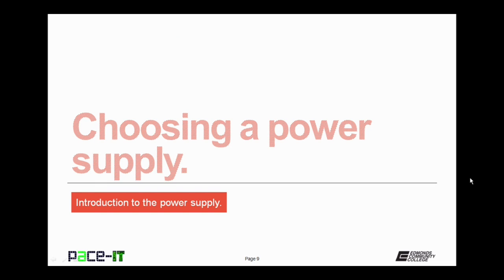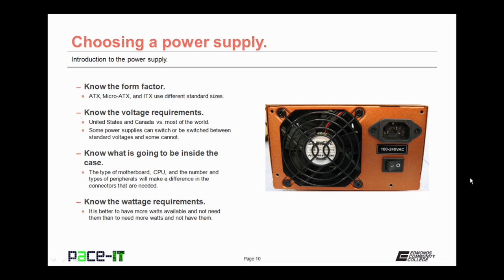Now let's talk about choosing a power supply for your PC. The first thing you need to know is the form factor. ATX, micro ATX, and ITX use different standard sizes for their power supplies — you cannot physically put an ATX power supply into an ITX case; it just won't fit. You also need to know your voltage requirements: are you in the United States and Canada needing 110 to 120 volts, or do you need the higher voltages the rest of the world uses? Some power supplies can switch between standard voltages, but others cannot.